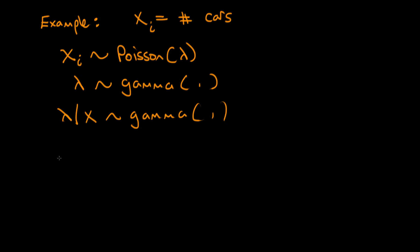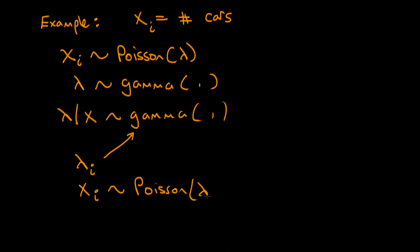To generate the posterior predictive distribution, we first sample a value of lambda_i from our posterior distribution. Then we sample a value of x-tilde_i from a Poisson distribution conditional on that value of lambda_i. We iterate both of these processes and look at the values of x-tilde_i that we draw out.